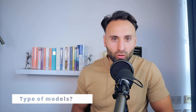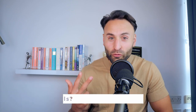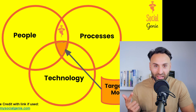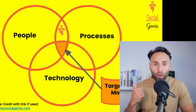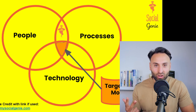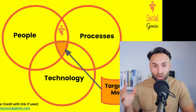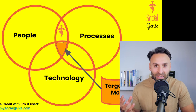The simplest form of a target operating model involves just three parts: people, processes, and technology. What people, processes, and technology does your business need to accomplish its desired high level goal?